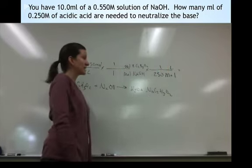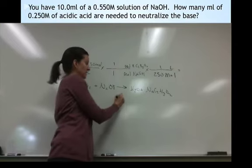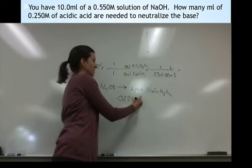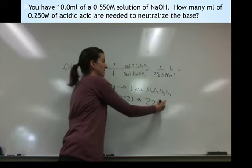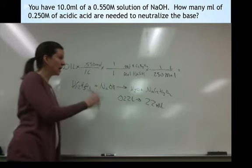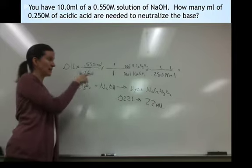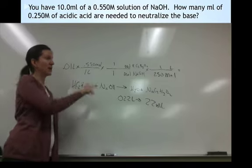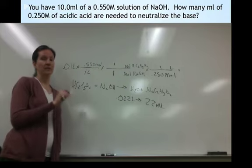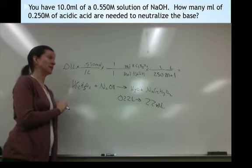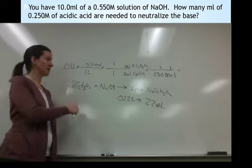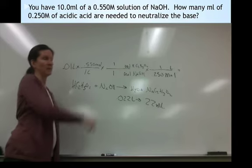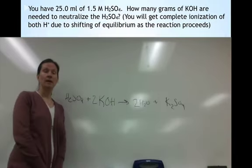If I calculate this out, I get 0.022 liters, which is the same thing as 22 milliliters. And that's the volume, then, of acetic acid at that concentration that I would need to react with this amount of sodium hydroxide to neutralize it. If I used more or less of it, I wouldn't end up at neutral because I'd have some of the acid or some of the base left behind.